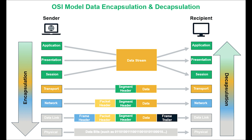In the encapsulation and decapsulation process, each layer on the receiving host does the opposite of what was done at that layer on the sending host. The receiving host's network layer, for example, strips off what was added by the network layer on the sending host. Note this for the exam.